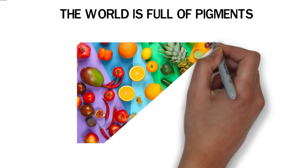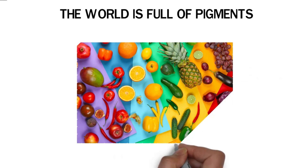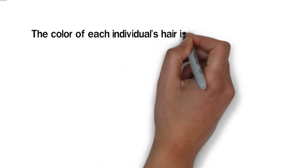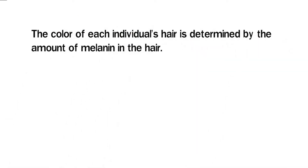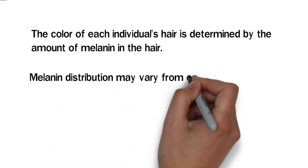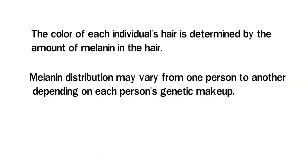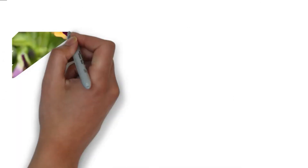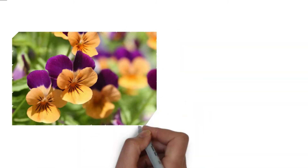The world is full of pigments that greatly improve the aesthetic appearance of the natural world. All natural hair color is the result of a pigment called melanin. The color of each individual's hair is determined by the amount of melanin present, and melanin distribution may vary from person to person depending on genetic makeup. The skin also gets its color from this pigment.